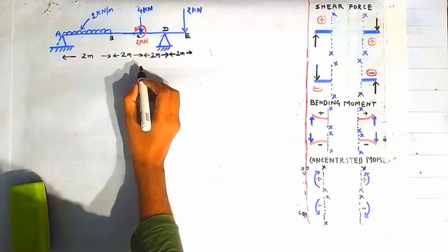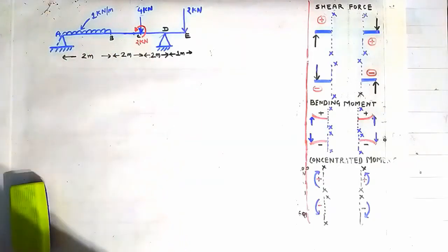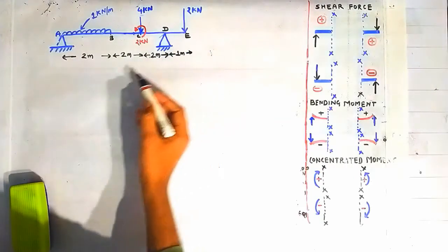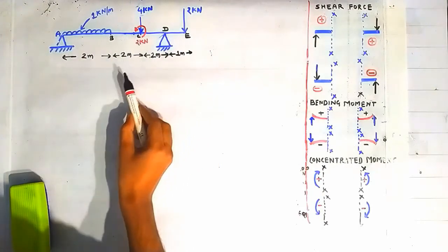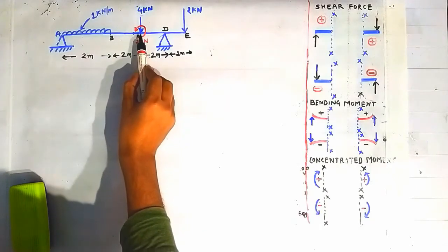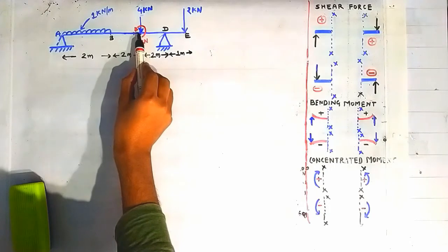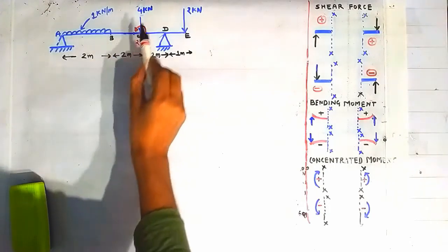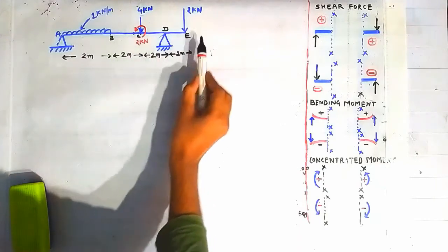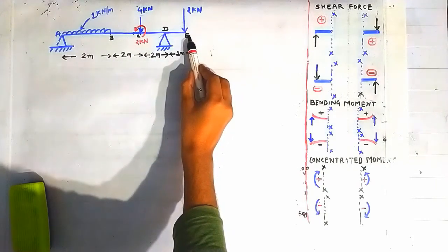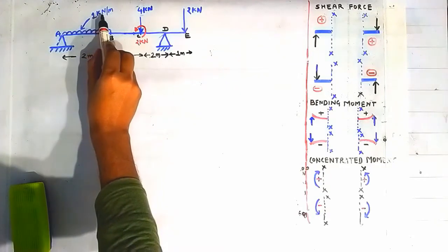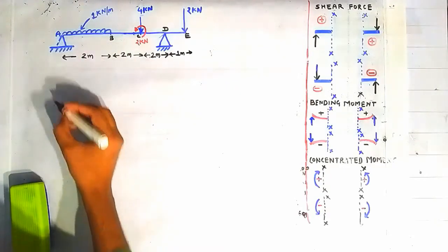Hello friends, welcome to my YouTube channel. Today we are going to discuss a new numerical problem on shear force and bending moment diagram. This is an overhanging beam. There is a concentrated load of magnitude 2 kN acting in counterclockwise direction at point C, a load of 4 kN also acting at point C, a 2 kN point load acting at point E, and a UDL between points A and B of intensity 1 kN per meter.